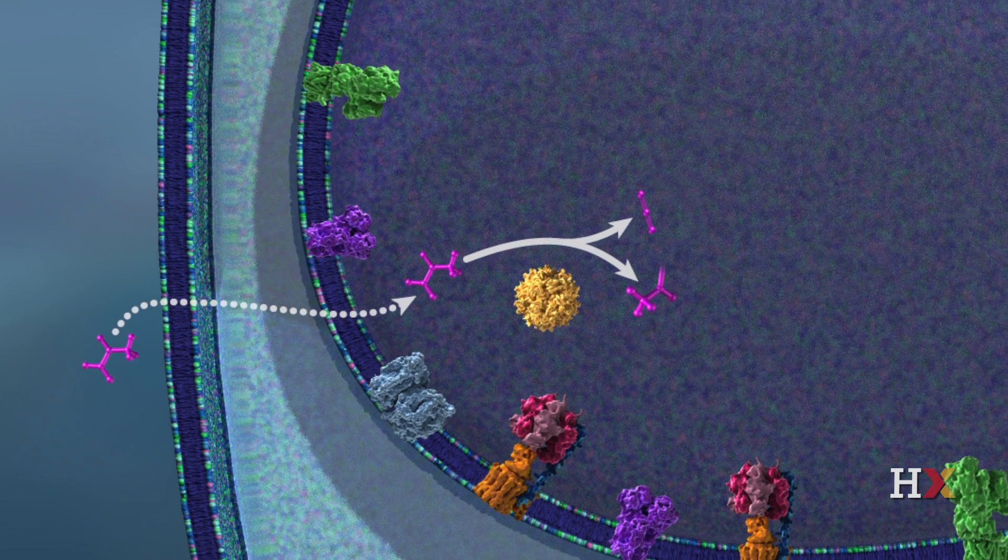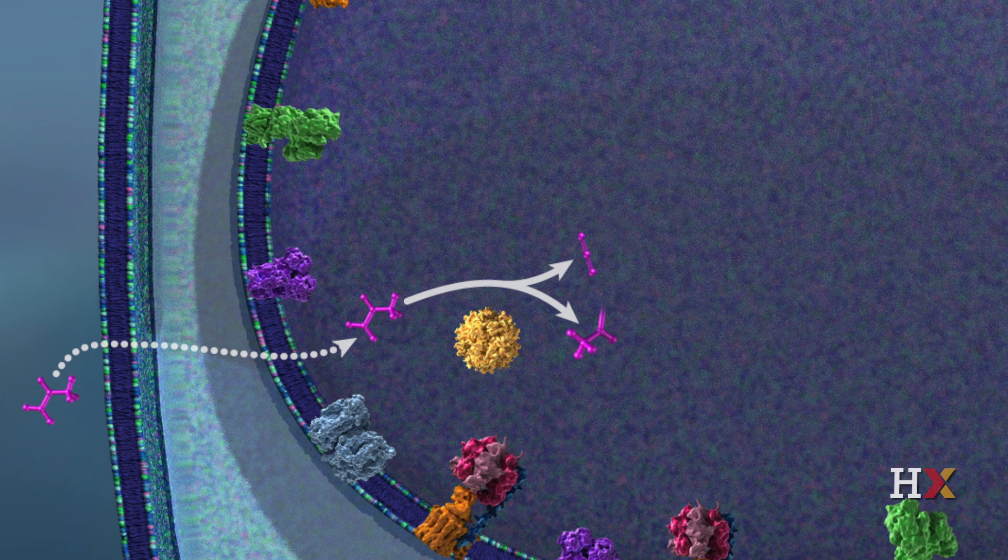The citric acid cycle consists of the following eight steps and also harvests chemical energy, producing a total of three NADH molecules.